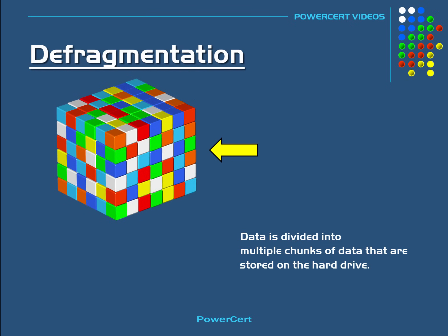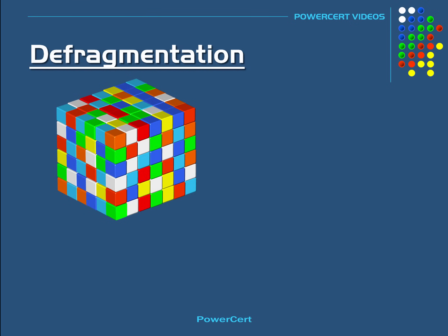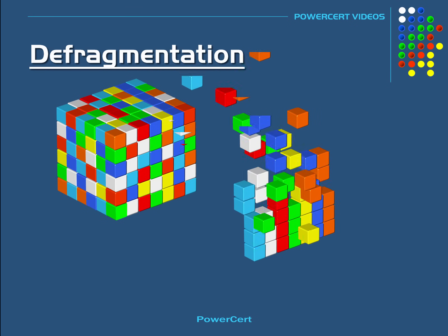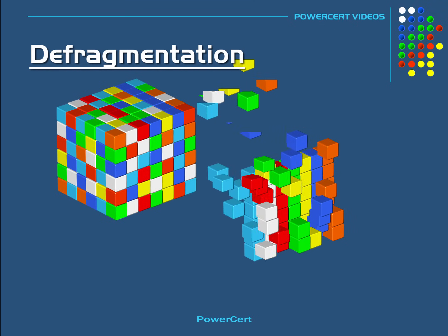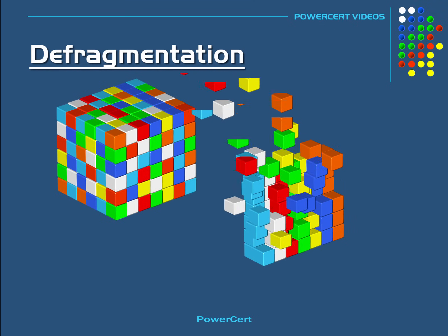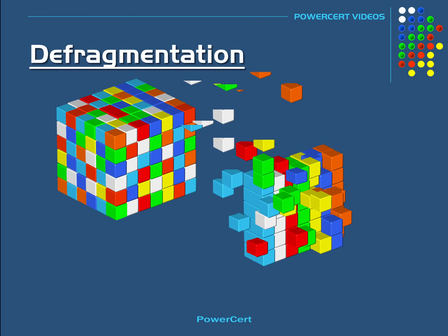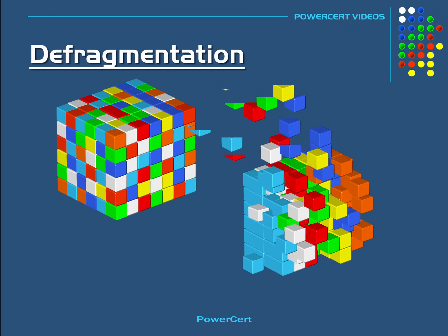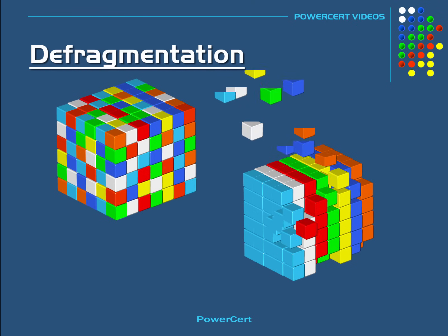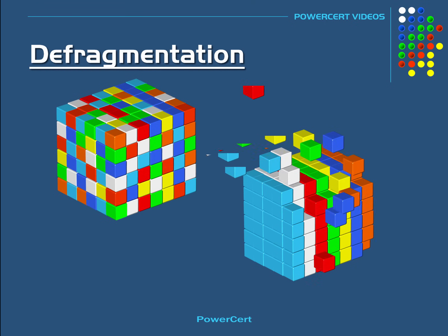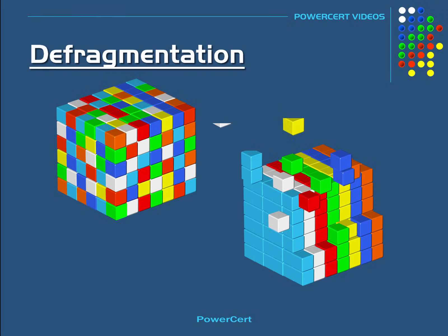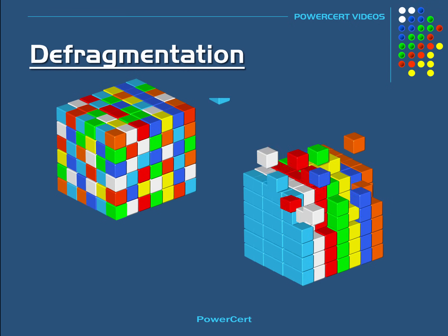So when you do a defrag, it will reassemble all of the related chunks of data that have been broken up and put them together in the same physical location. It's going to put all the files that belong to a certain program together, all the files that belong to a certain video together, the same with documents, music, and so on. And it's also going to put all the free space on the hard drive together as well.